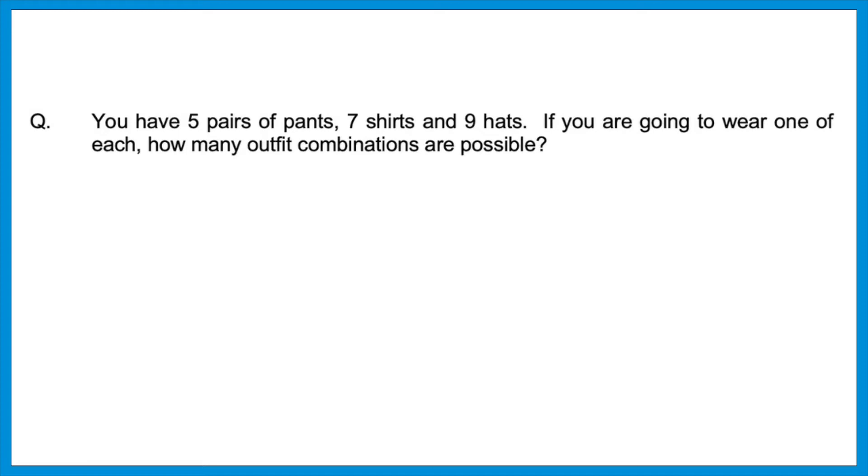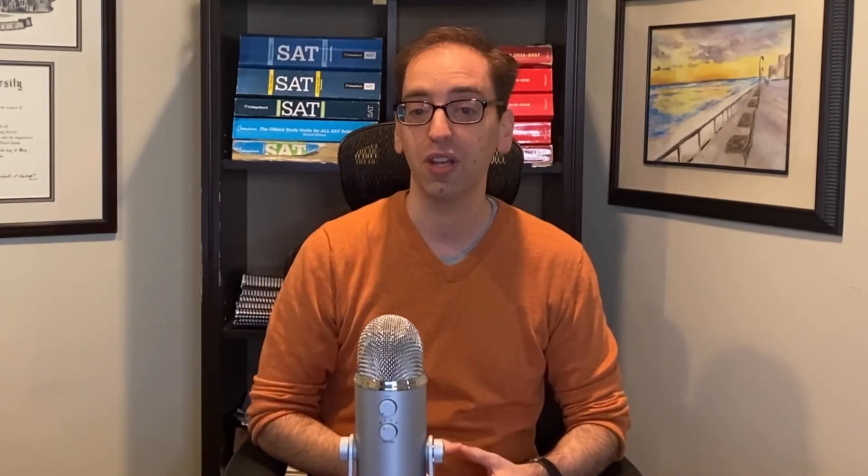And that's going to be a very important underlying theme for the next two questions. When they want to know how different events might happen consecutively, it's all about multiplying the possibilities. Let's see how this appears on some harder questions. You have five pairs of pants, seven shirts, and nine hats. If you're going to wear one of each, how many outfit combinations are possible? We could do this the long way with a tree diagram. In other words, you could draw out five pairs of pants, and then from each one have seven branches come off for the shirts. And then from those, nine more from each one for the hats. But don't do that, it would take a very long time. All you have to do is multiply these numbers. Five times seven times nine. The answer is 315.